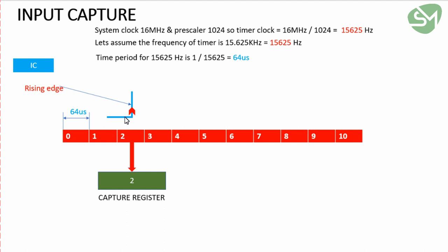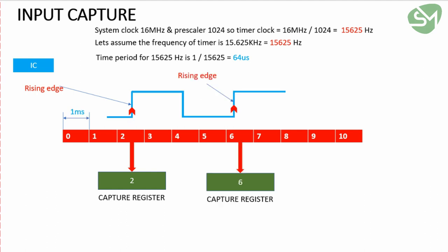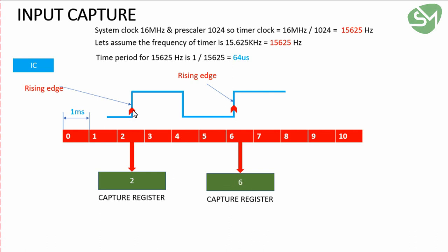The pulse goes on, and when the next rising edge occurs at the input capture pin, the corresponding count value of the timer will be loaded into the capture register. Here it is 6, so the value 6 is loaded to the capture register.